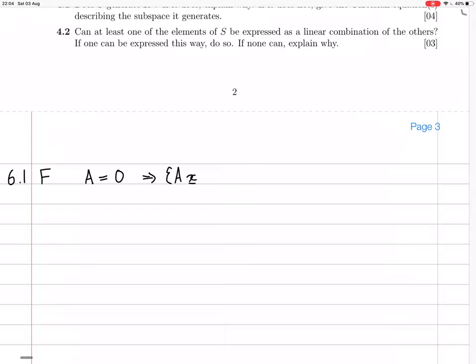because if A equals the zero matrix, then A, it doesn't matter what the x₁ to xₙ are, but that's just the set containing the zero vector, which is LD, linearly dependent.